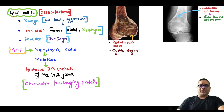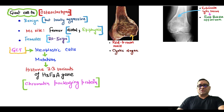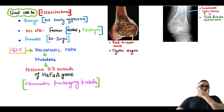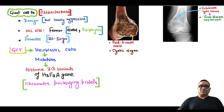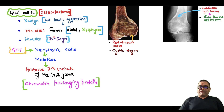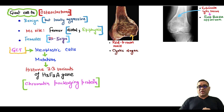Hello everyone. In this high-yielding short, I am going to tell you about giant cell tumor, which is also known as osteoclastoma. It is a benign but locally aggressive tumor. The most common site is the distal part of the femur, involving the epiphysis. Females are commonly affected, and the age group is 20 to 50 years.